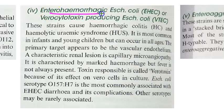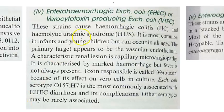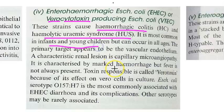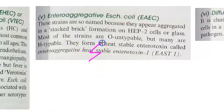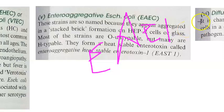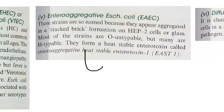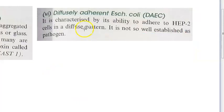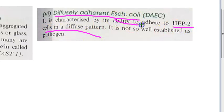Enterohemorrhagic E. coli (EHEC) are also called verocytotoxin-producing E. coli. They cause hemorrhagic colitis and hemolytic uremic syndrome, common in infants and children but can occur at all ages. Enteroaggregative E. coli aggregate in a stacked brick formation on HEP2 cells or glass. Diffusely adherent E. coli (DAEC) adhere in a diffuse pattern on HEP2 (human epithelial) cells.